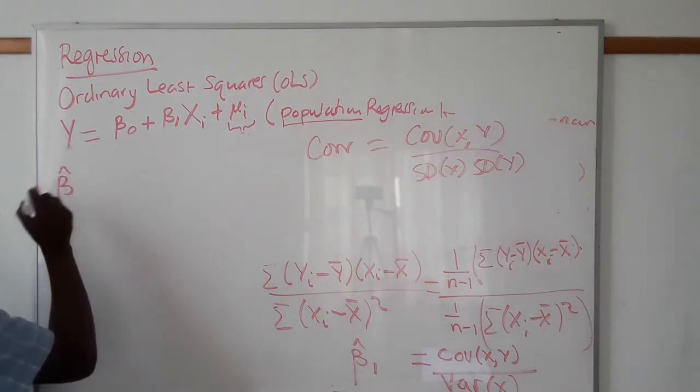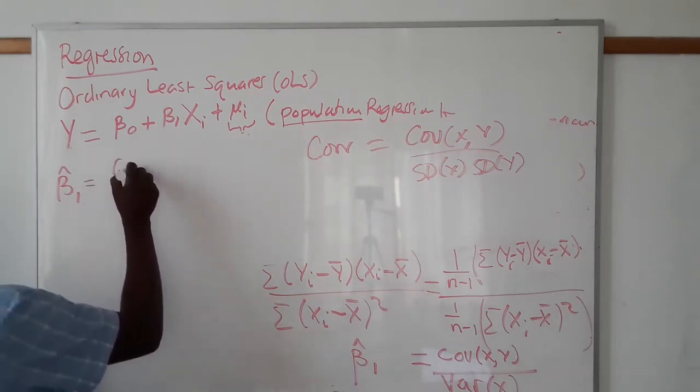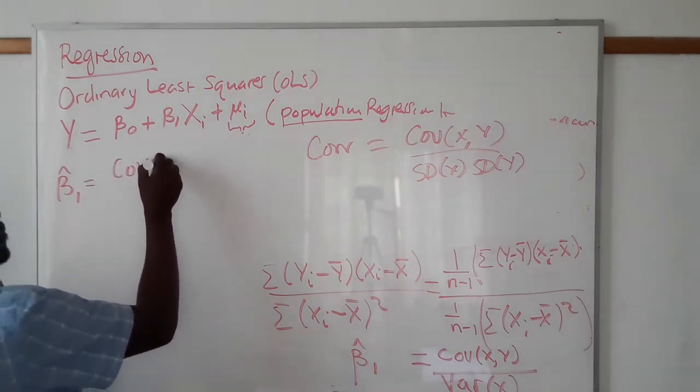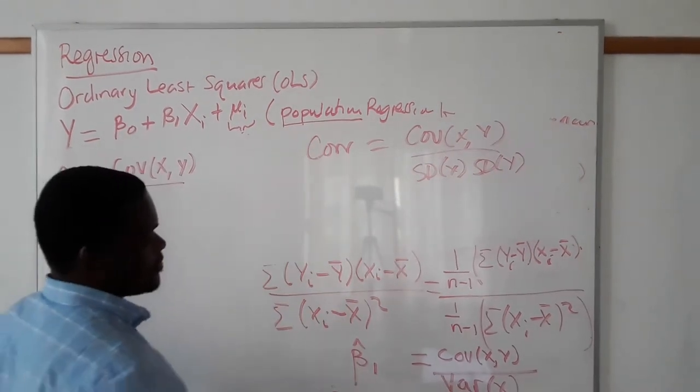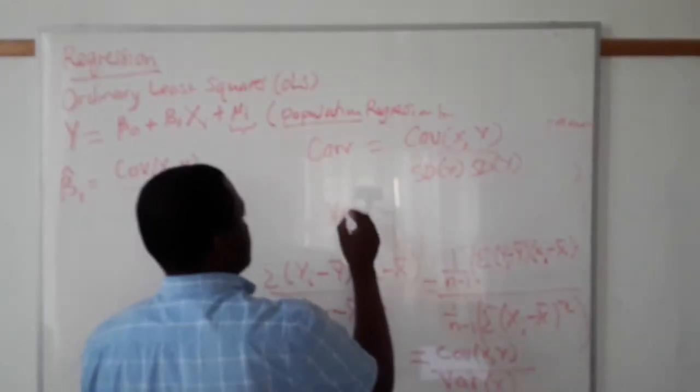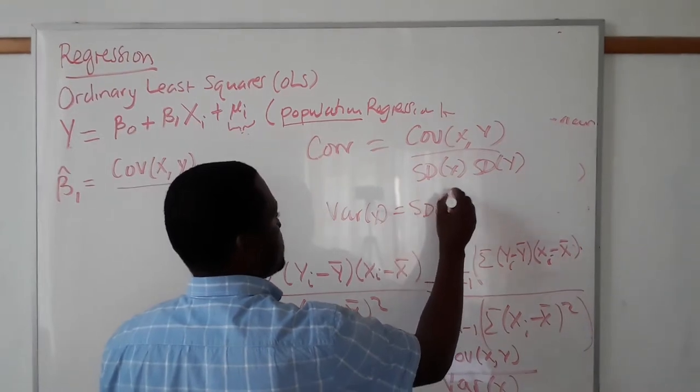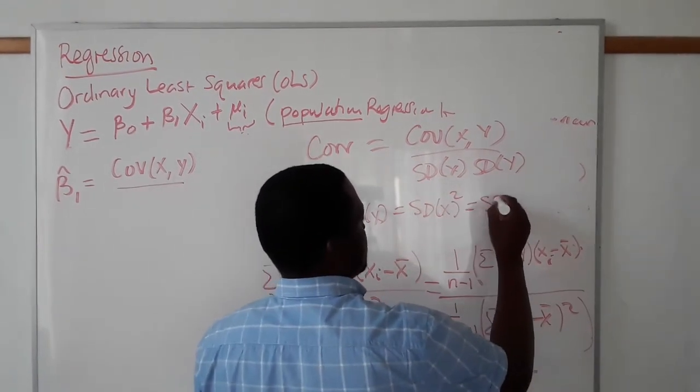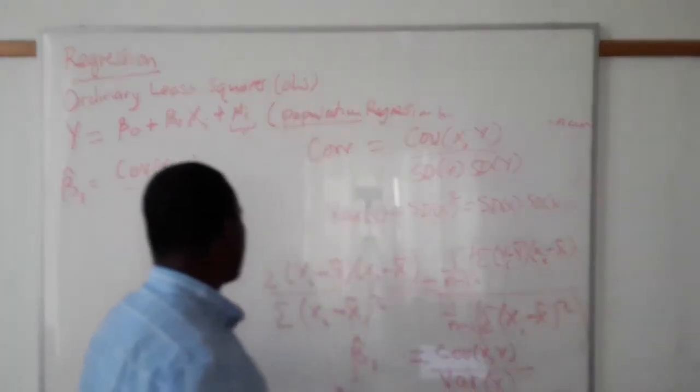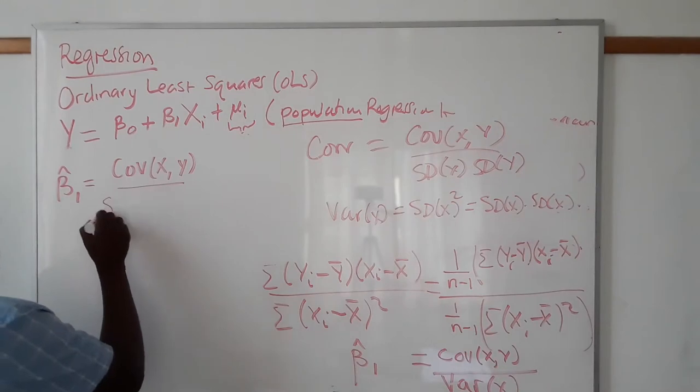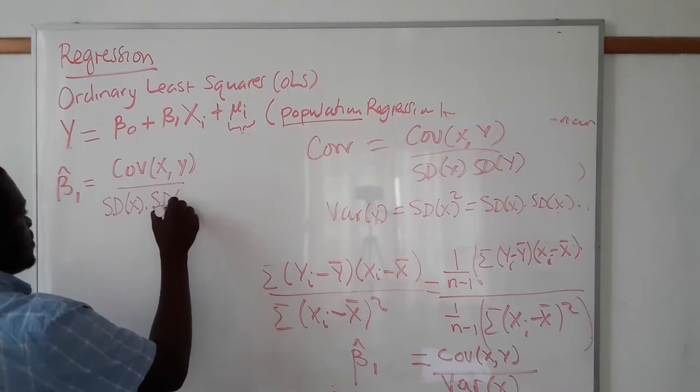What we know is that variance of X is actually standard deviation of X squared, which can be written as standard deviation of X times standard deviation of X. So I want to write this as standard deviation of X by standard deviation of X.